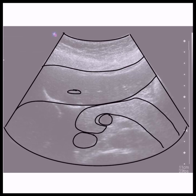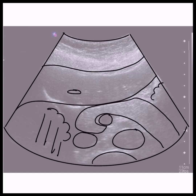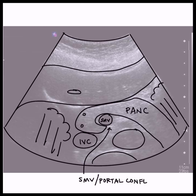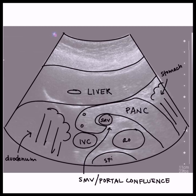The head of the pancreas is also the most common location for cancer to appear, which is another good reason to take dedicated pancreas head images. Make sure you can see the pancreas tissue surrounded by landmarks: the liver is anterior, the duodenum to the patient's right, the inferior vena cava posterior, and the portal confluence to the patient's left. Other structures you may also see include the gastroduodenal artery and common bile duct in the head, the aorta and superior mesenteric artery posterior, the spine even further posterior, and more of the pancreas towards the patient's left.